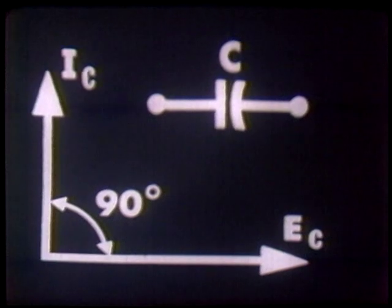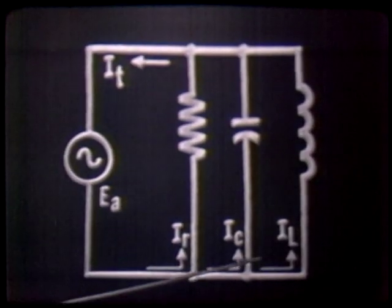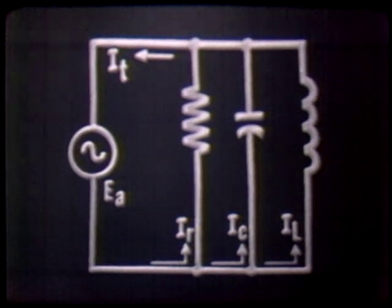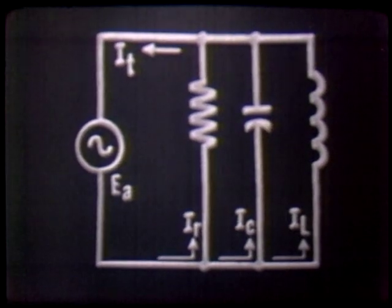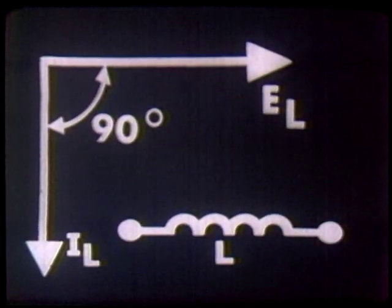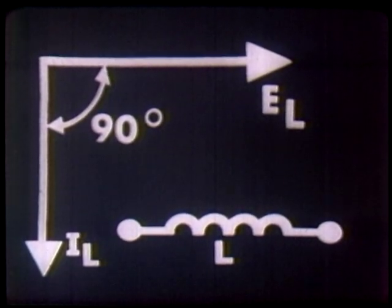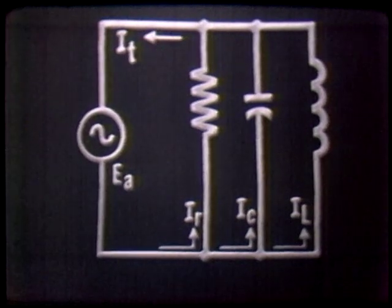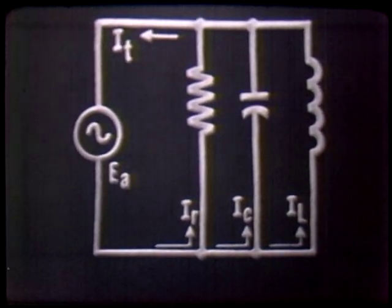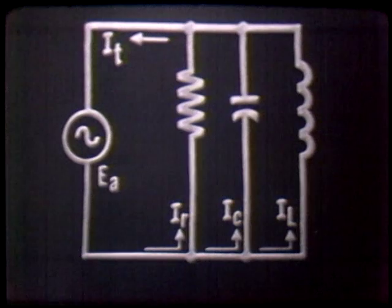IC leads EC by an angle of 90 degrees. Our third current is the inductive current, IL. The voltage across and the current through any pure inductive component is also 90 degrees out of phase, but the current lags the voltage by 90 degrees — IL lags EL by 90 degrees. It is evident that a current vector is used to represent a parallel AC network, so we need to know the individual branch currents to solve a typical problem.